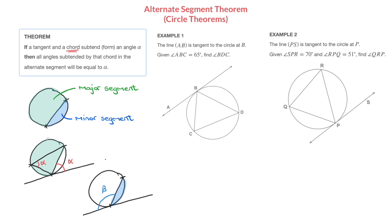For instance, I could consider another point on the circumference and join it to the endpoints of the chord, and once more the angle formed would equal alpha. Looking at the second circle, the reasoning is identical. If I place a point anywhere along the circumference of that alternate segment and join it to the endpoints of the chord, the angle formed at the circumference of that alternate segment would also be equal to beta. And that's all that this theorem is actually telling us.